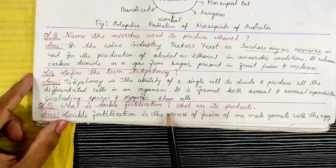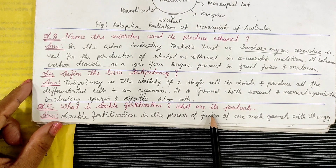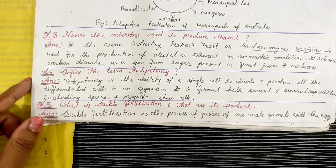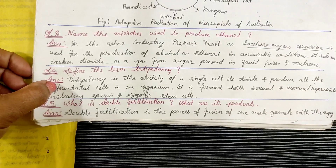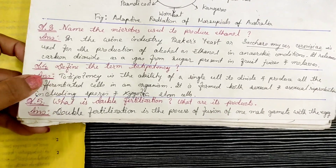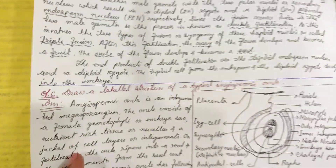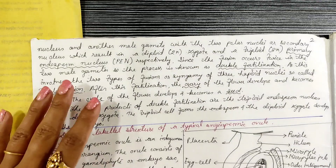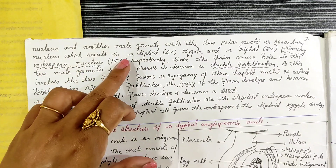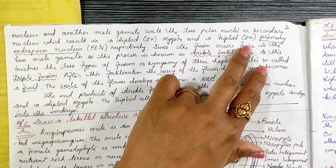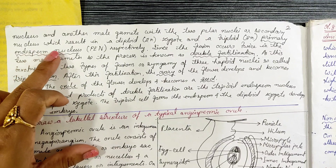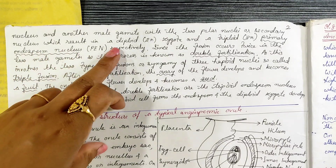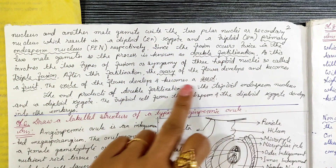Next question: what is double fertilization and what are its products? Double fertilization is a process of fusion of one male gamete with the egg nucleus, and another male gamete with the two polar nuclei or secondary nucleus, which results in a diploid.